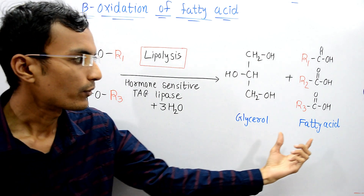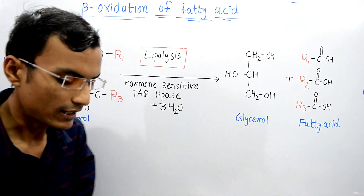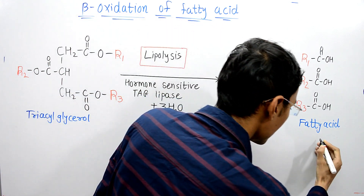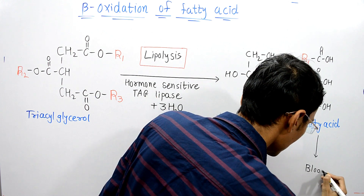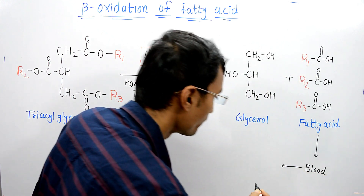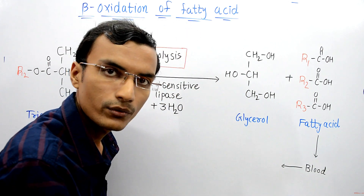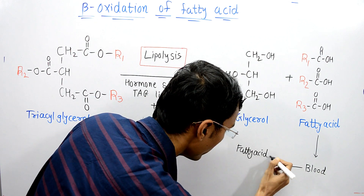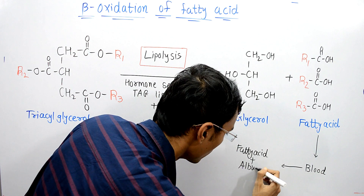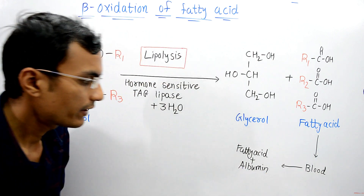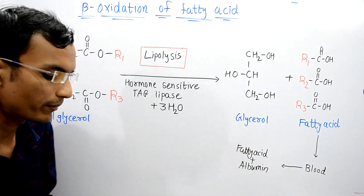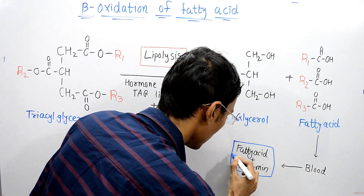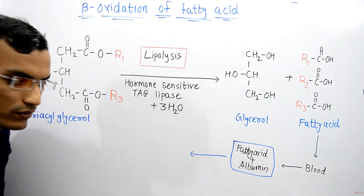The fatty acids produced inside the adipose tissues are transported to the blood. Inside the blood, fatty acids are bound to albumin. Fatty acid molecules are transported in a bound state with albumin, and this fatty acid-albumin complex is then transported to desired tissues.